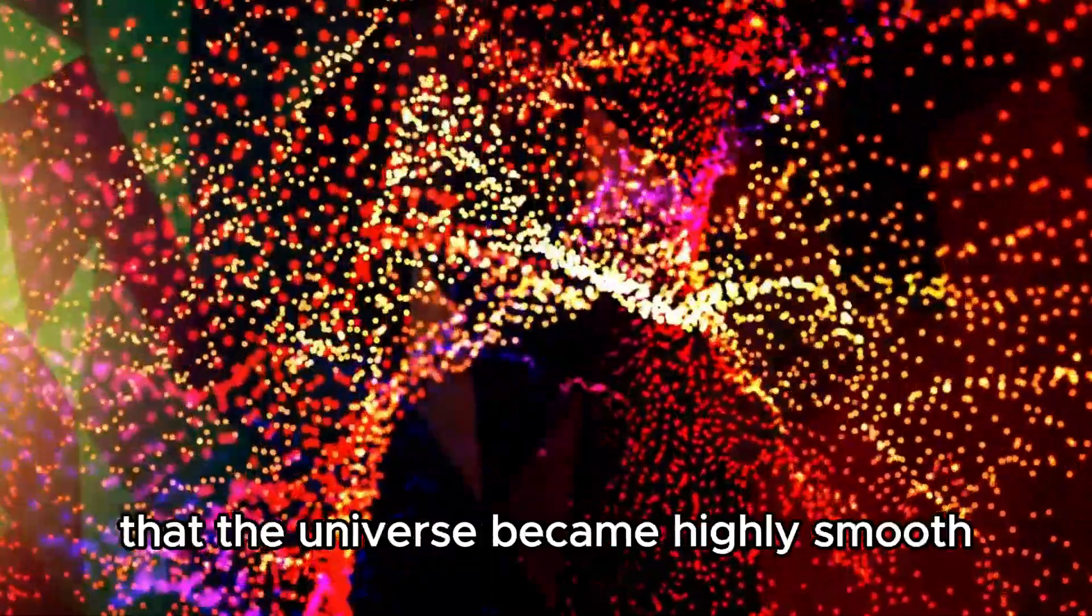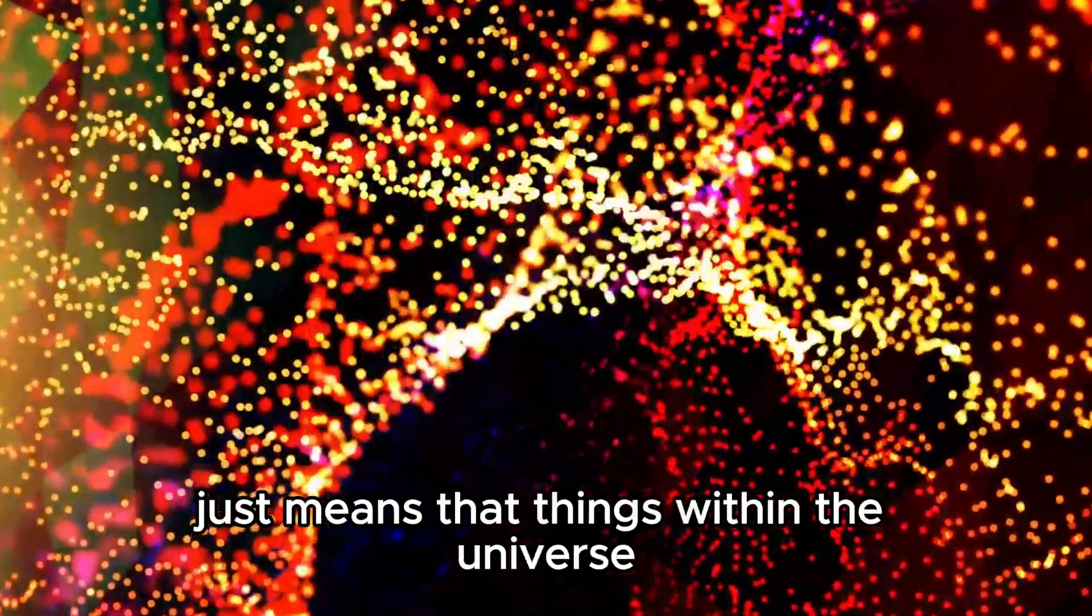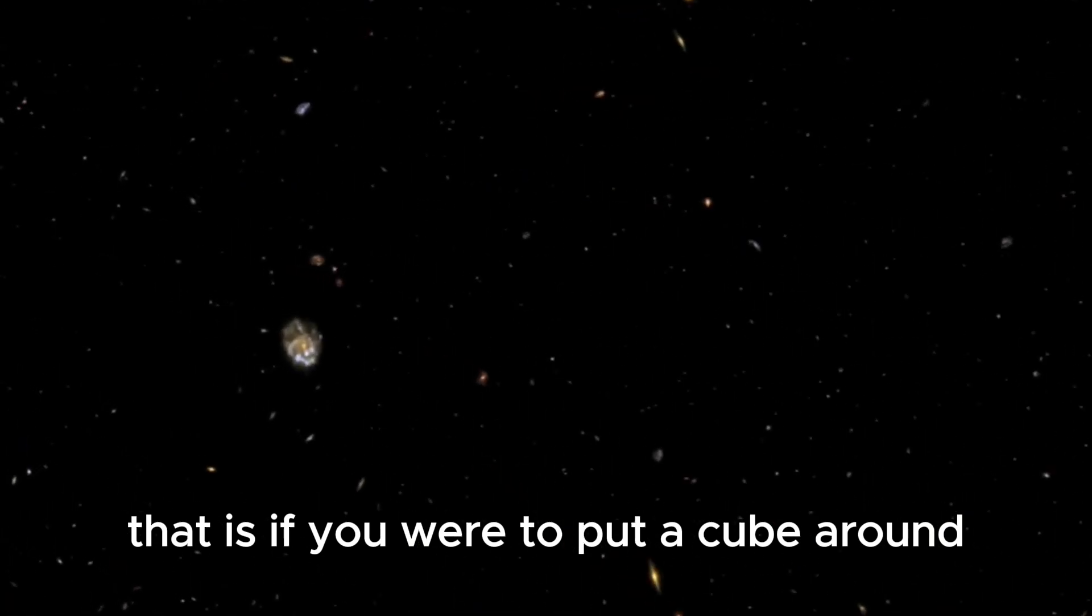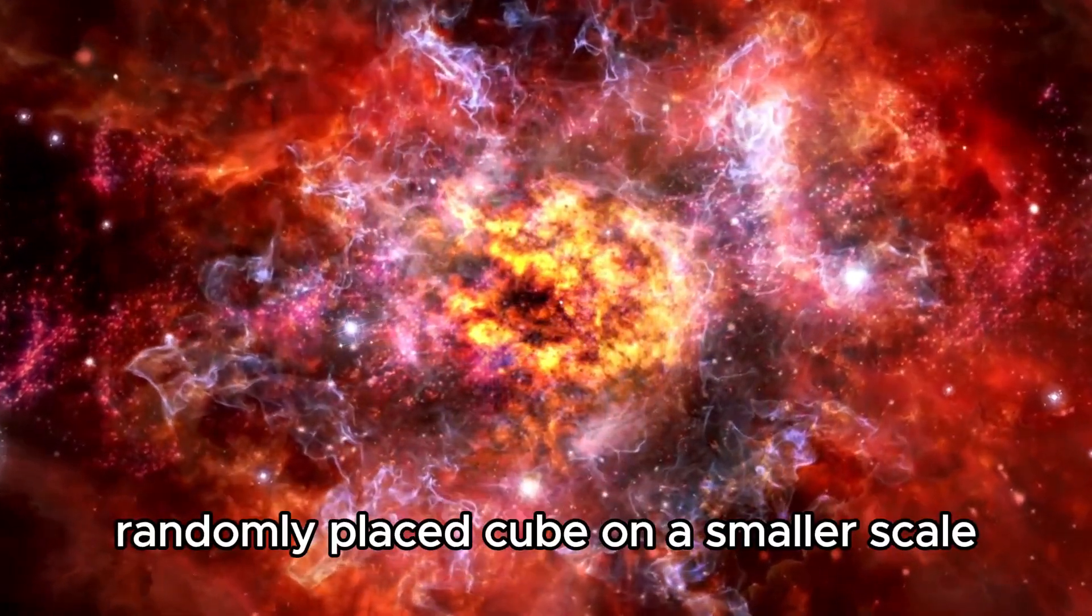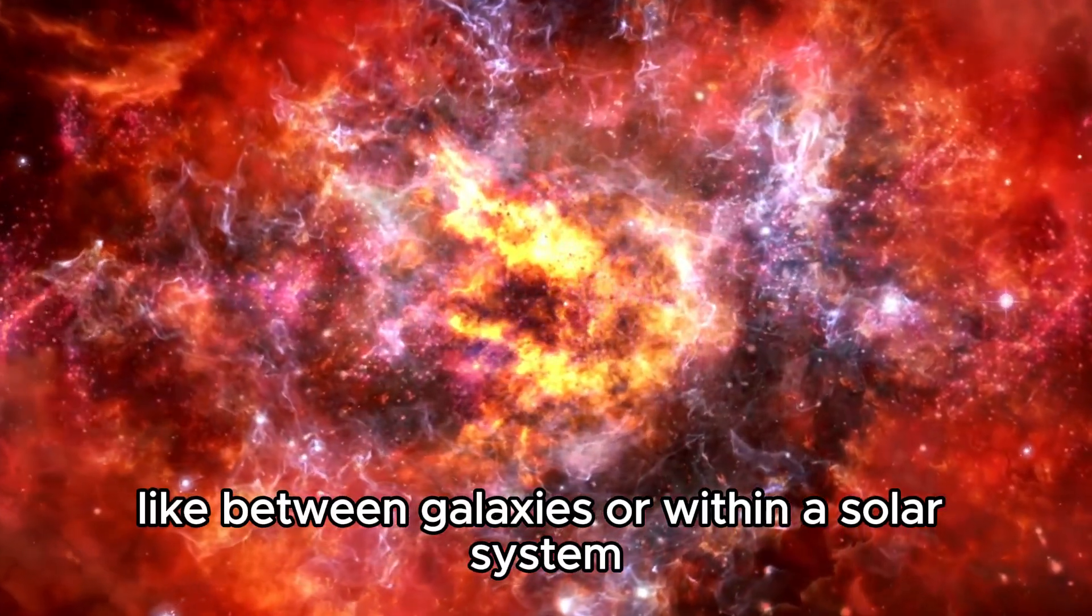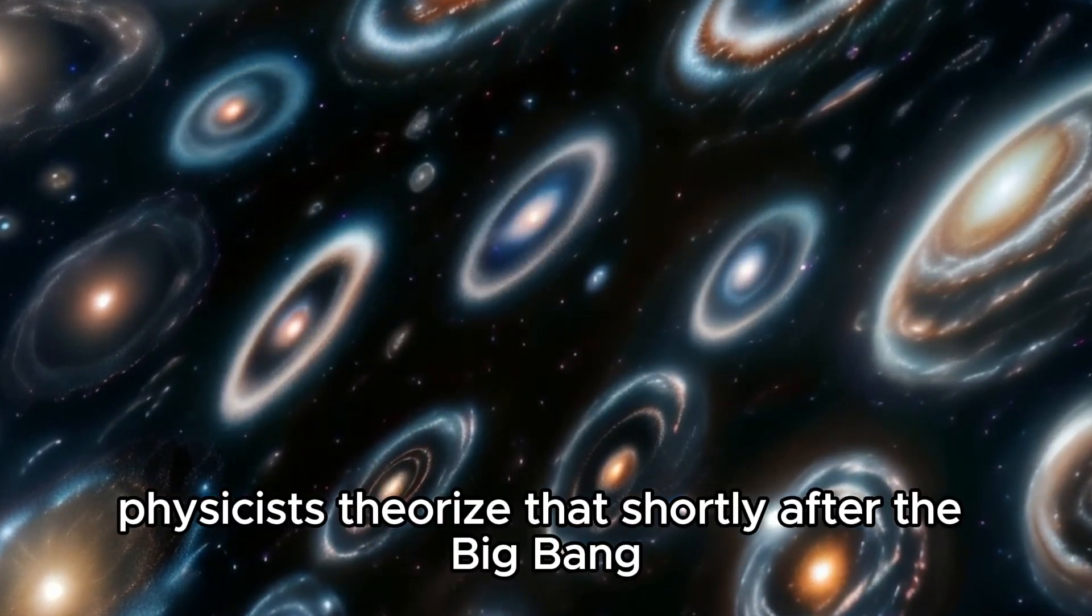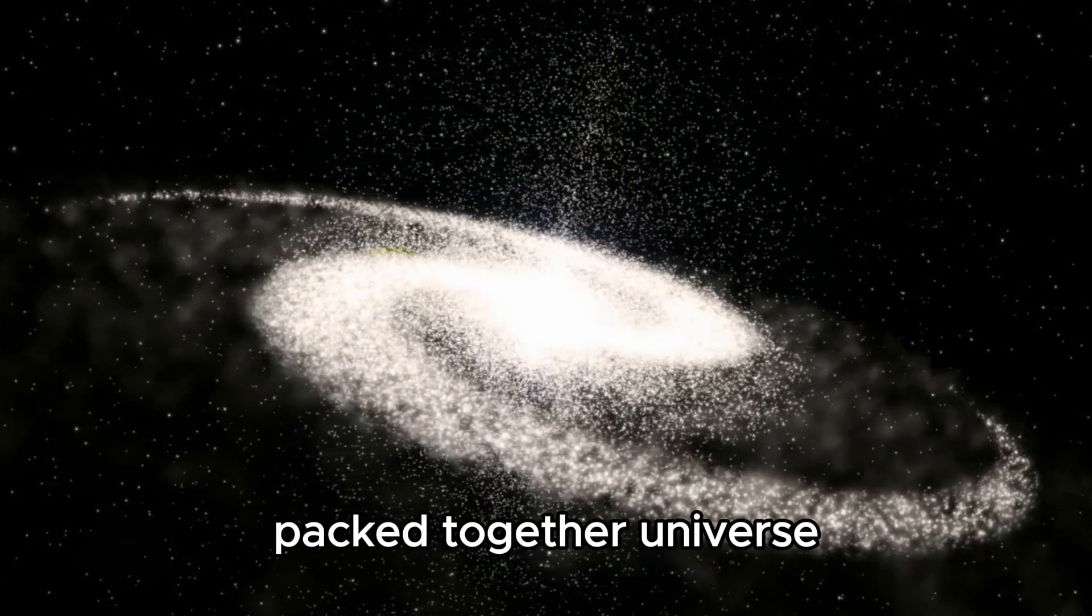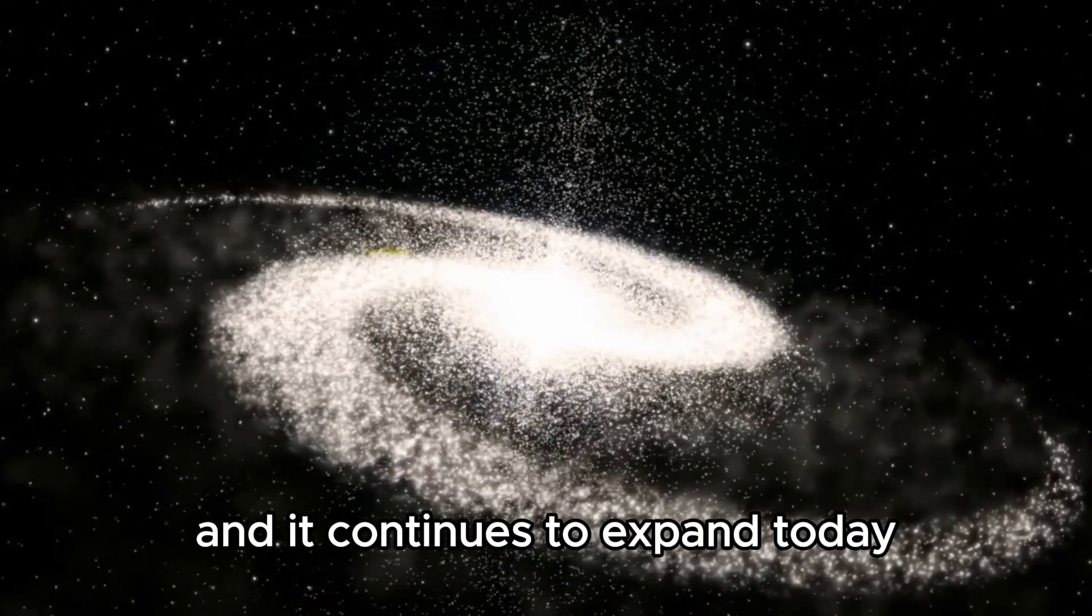It spread in such a way that the universe became highly smooth. Smoothness on an enormous scale just means that things within the universe are relatively evenly distributed. On a smaller scale, like between galaxies or within a solar system, matter is lumpy and filled with clusters. Physicists theorized that shortly after the Big Bang, something called inflation occurred. Essentially, what was once a tiny, packed-together universe expanded out rapidly in a fraction of a second, and it continues to expand today.